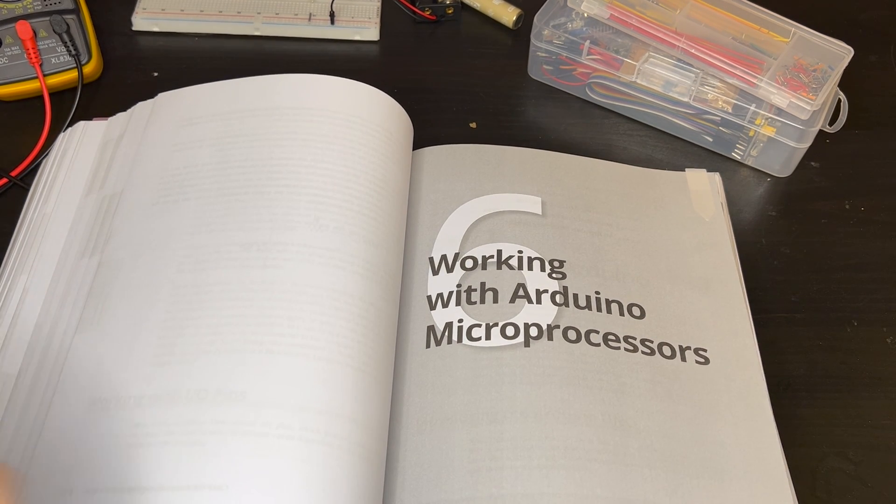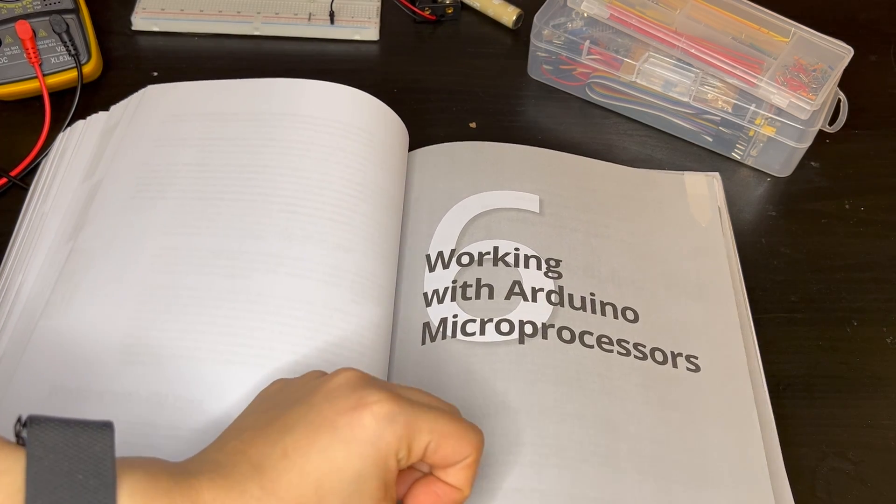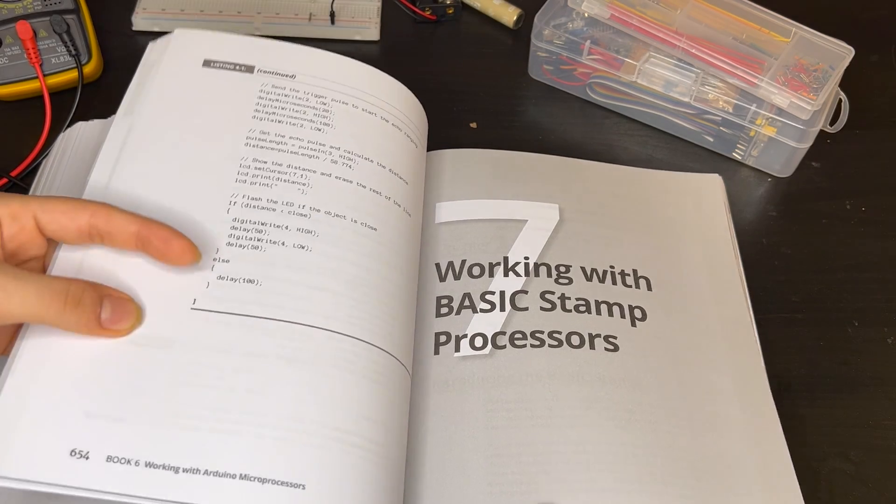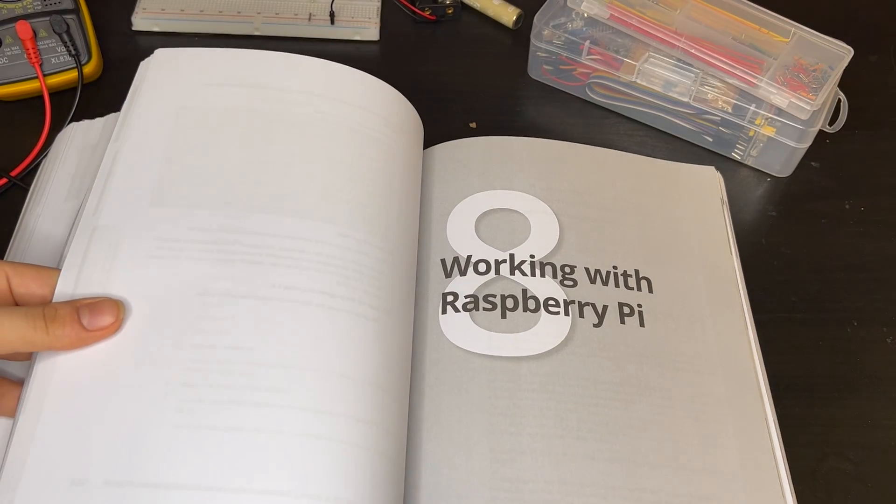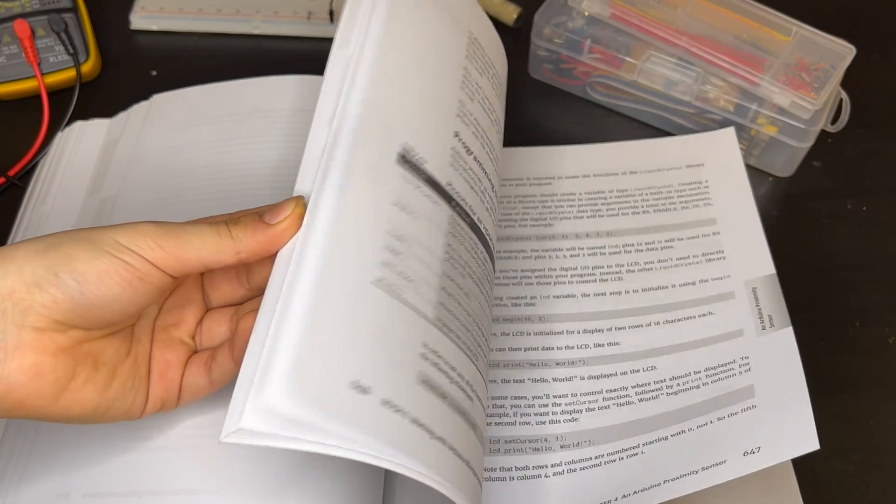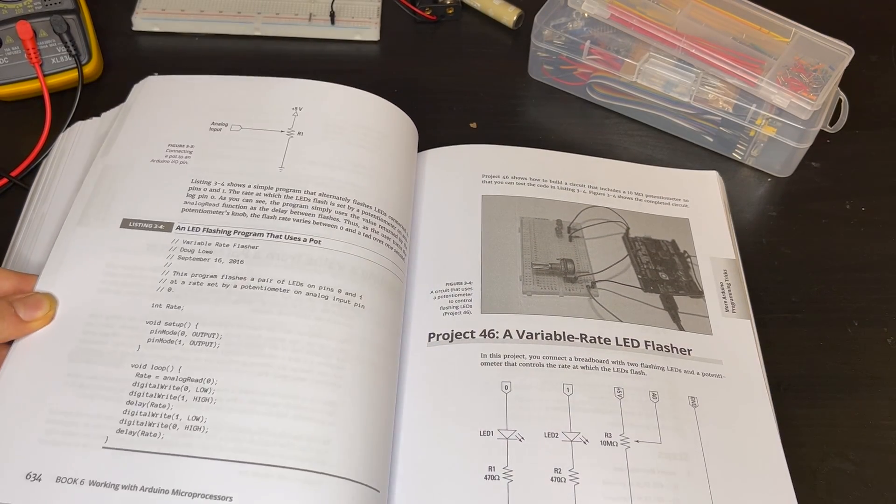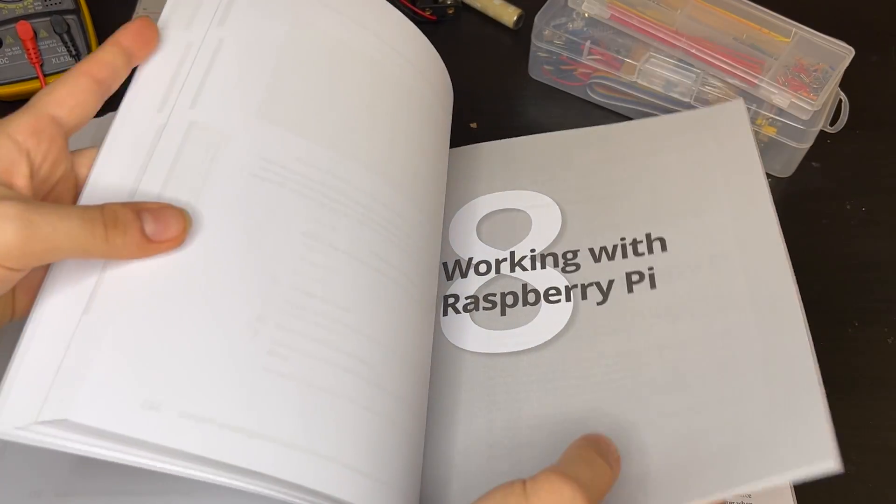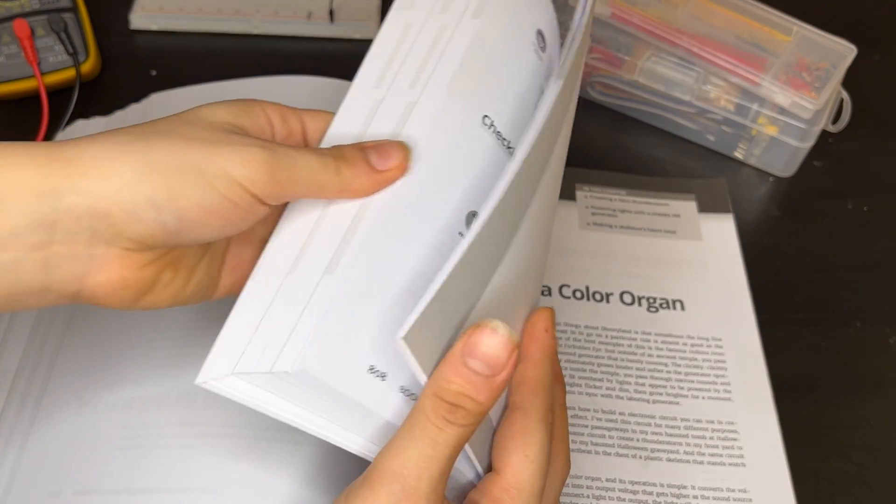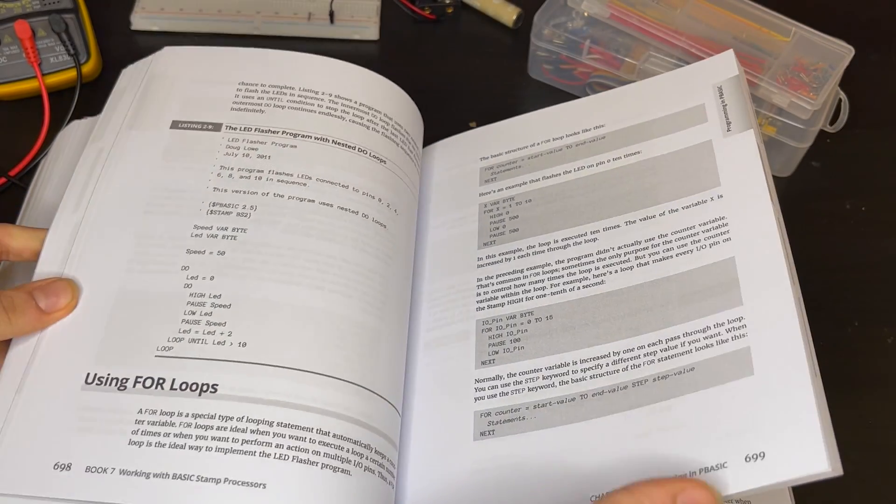In Books Six, Seven, and Eight, you start using microprocessors. In Book Six, you work with Arduino. In Book Seven, you work with Basic Stamp. In Book Eight, you work with Raspberry Pi. These three books have many projects and instructions about assembling and programming the microcontrollers. I don't have these microprocessors, so I haven't gone through them in detail.